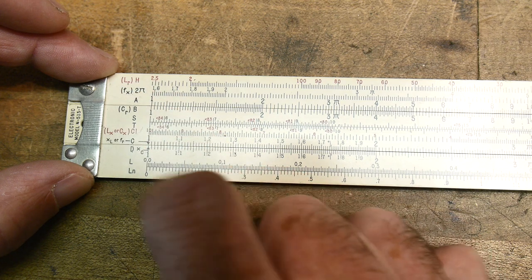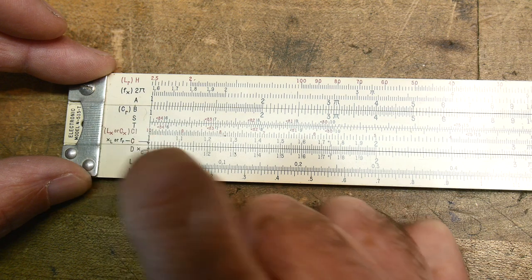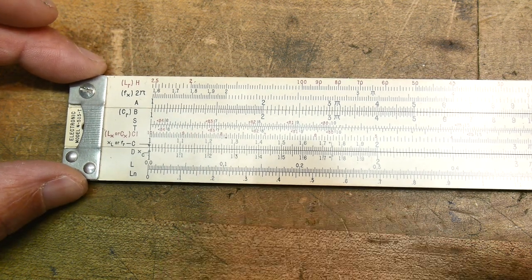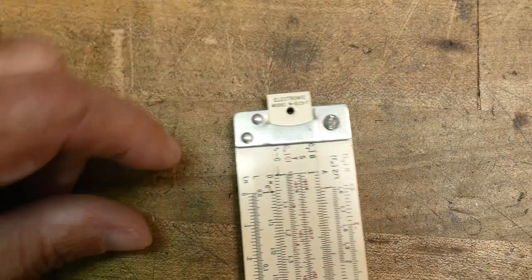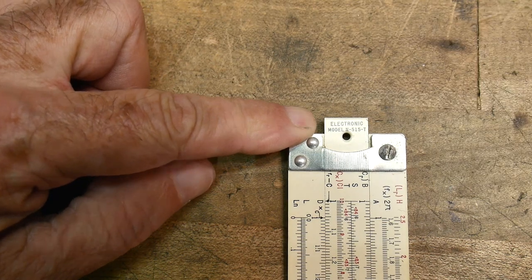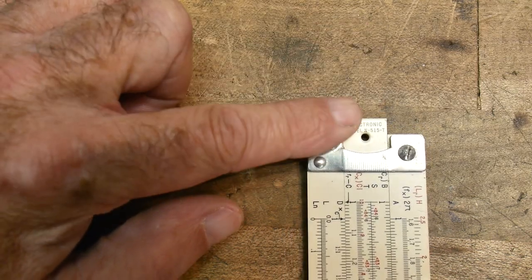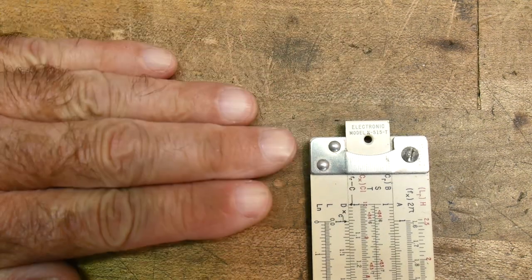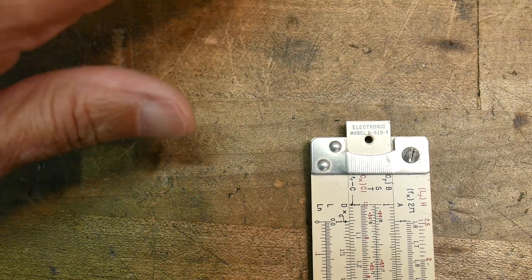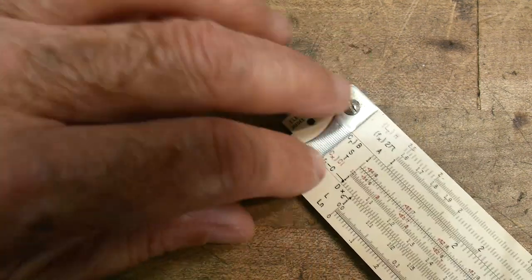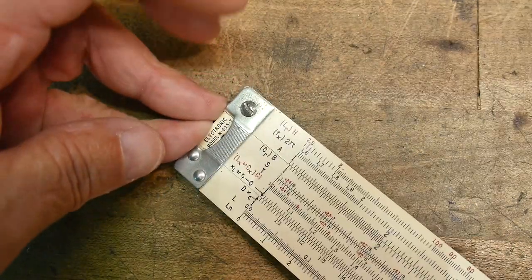And then there's a couple weird scales up here. And you can also notice there's a lot of weird writing here. L's and C's and X's and F's and stuff. So it's all made to be special for electronics. You can actually see the number here. It's a Pickett electronic model N515-T. And you can find the manual for this online. So I'll put a link down below.